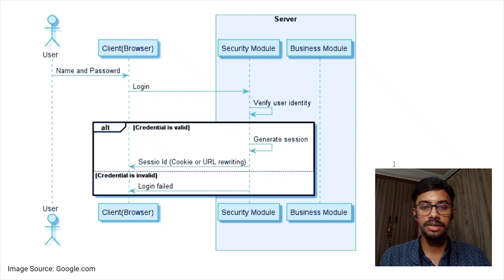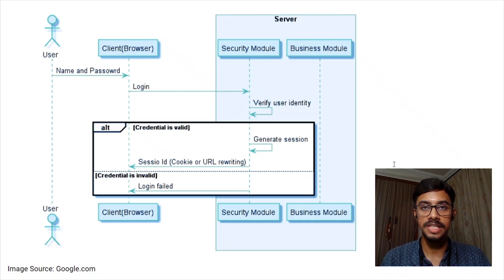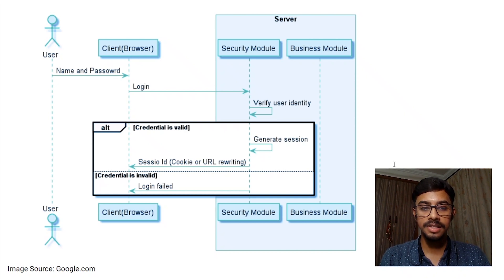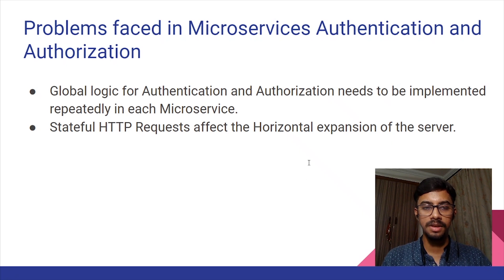The security module generally processes all received client requests through an authorization interceptor. The interceptor first determines whether the session ID exists. If it does, it knows the user has logged in, and by querying the user rights it determines whether the user can execute the request or not.